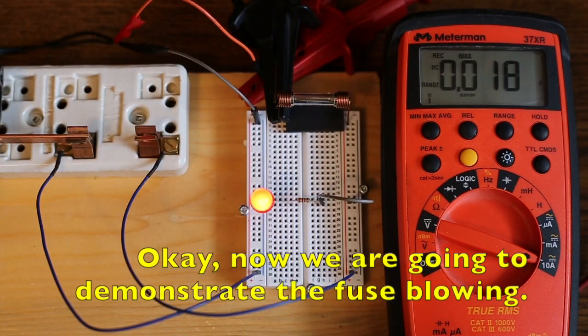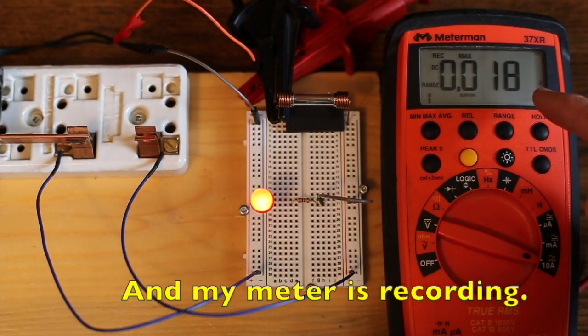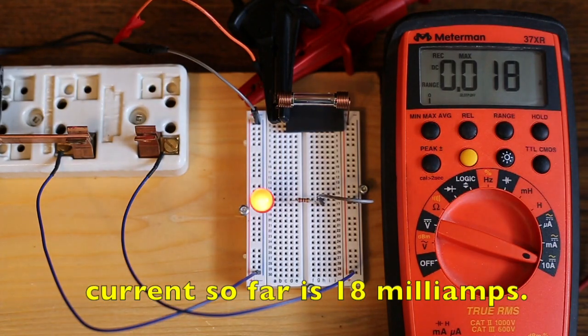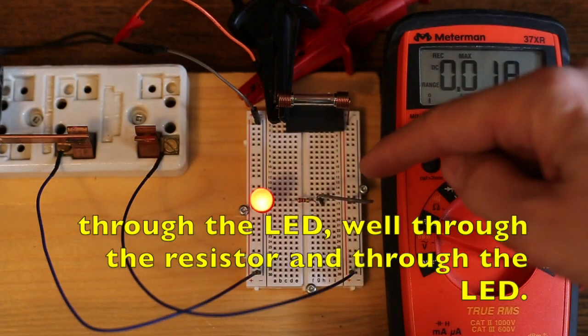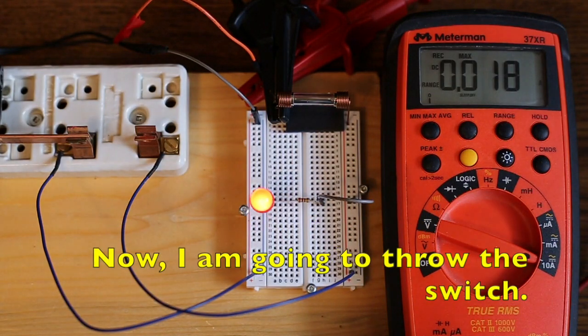Okay, now we're going to demonstrate the fuse blowing. And my meter is recording. It's showing that the maximum current so far is 18 milliamps through the LED, well, through the resistor and through the LED. And now I'm going to throw the switch.